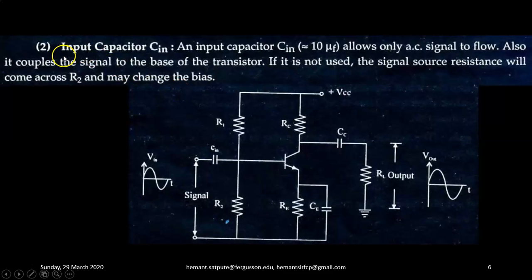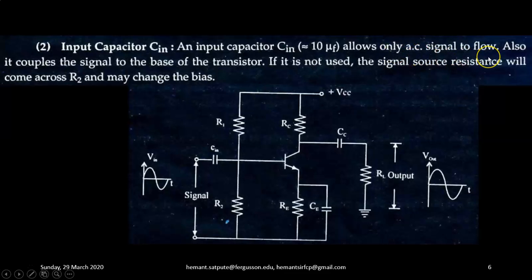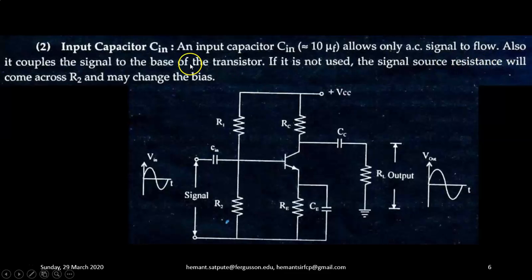Next is the input capacitor CIN. An input capacitor CIN, which is approximately 10 microfarad, allows only AC signal to flow inside the transistor. Also, it couples the signal to the base of the transistor. If it is not used, the signal source resistance will come across R2 and may change the biasing condition.